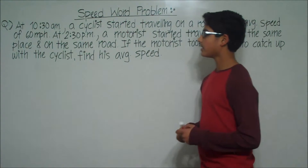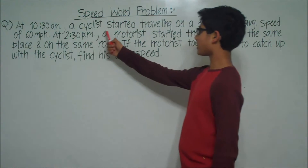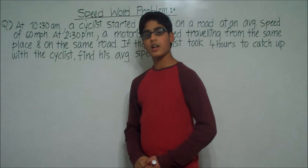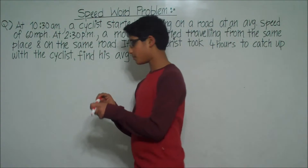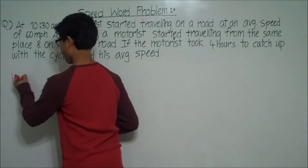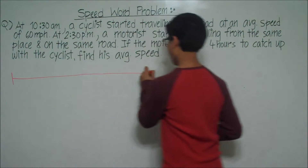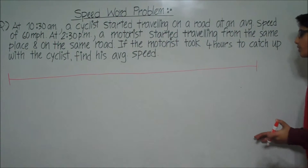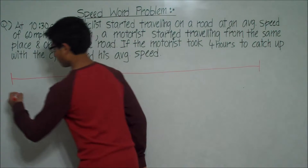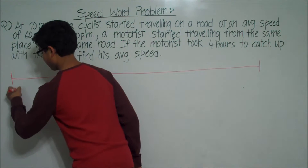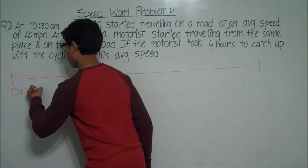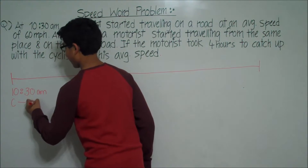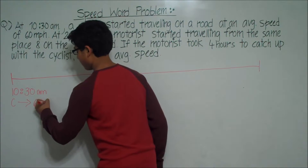The problem states that at 10:30 am a cyclist started traveling on a road at an average speed of 60 miles per hour. Let's first draw this road. This is the road that the cyclist and the motorist were driving on. At 10:30 am the cyclist starts at a speed of 60 miles per hour.